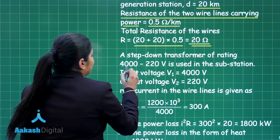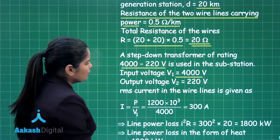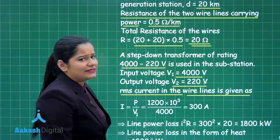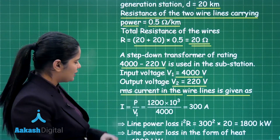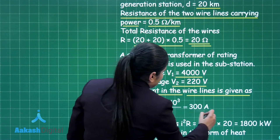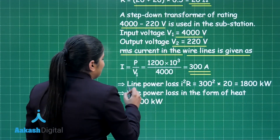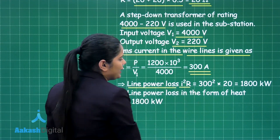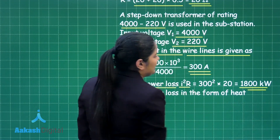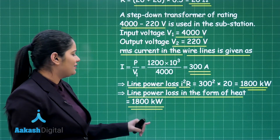The input voltage to the step-down transformer is 4000 volts. The RMS current in the wire lines is calculated as I = Power / Input voltage = 1,200,000 / 4000 = 300 ampere. The line power loss is I²R = 300² × 20 = 1,800,000 watts, which is 1800 kilowatt. So the line power loss in the form of heat is 1800 kilowatt.